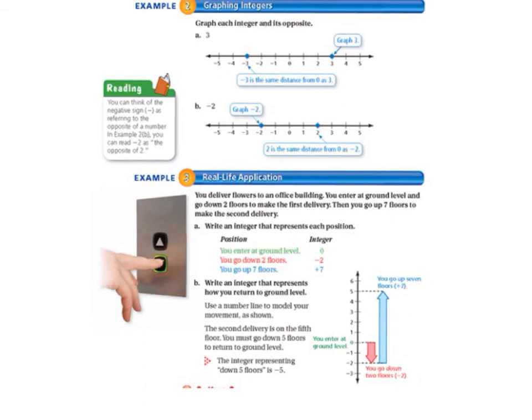Example 2 is on page 251. It says, graph each integer and its opposite. So letter A, the integer is 3. So we would graph 3 on the number line, and then its opposite is negative 3. So negative 3 is the same distance from 0 as 3, so that's what makes it the opposite.